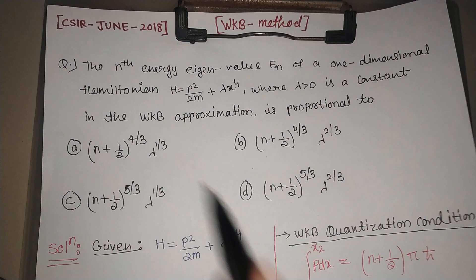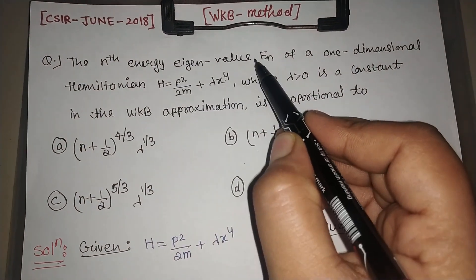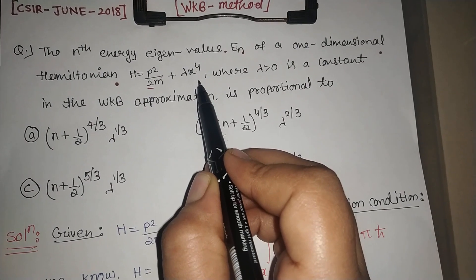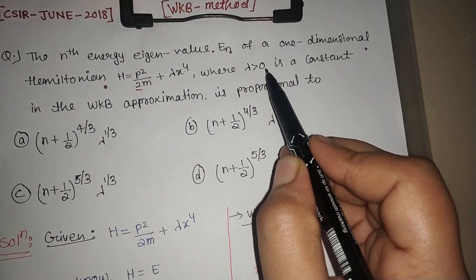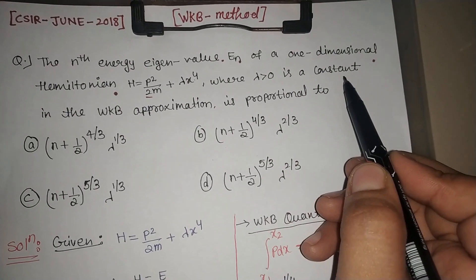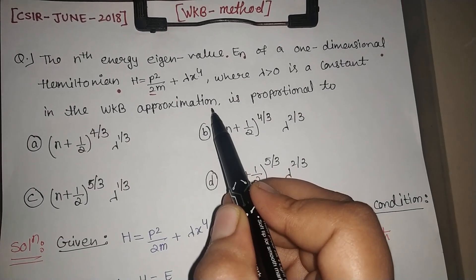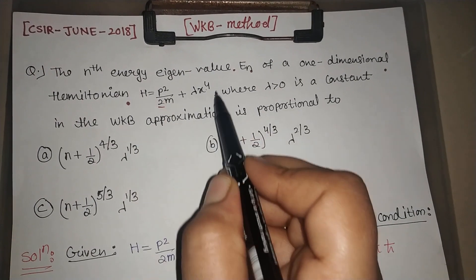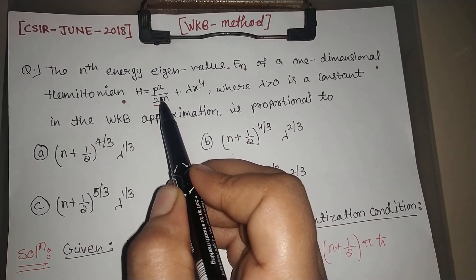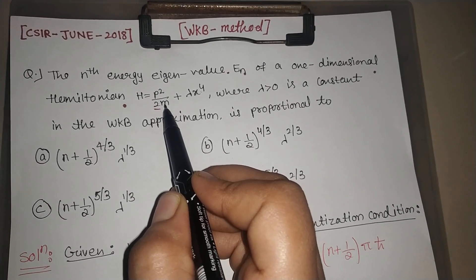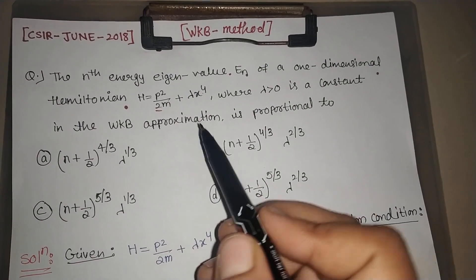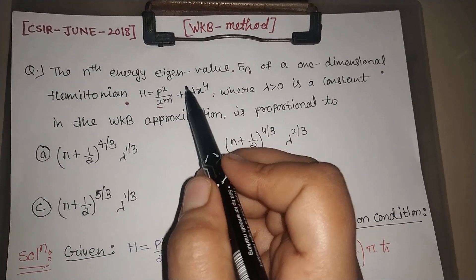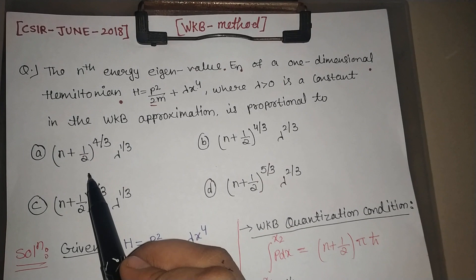The question is: the nth energy eigenvalue En of a one-dimensional Hamiltonian, which is given as H = p²/2m + λx⁴ where λ > 0 is a constant, in the WKB approximation is proportional to which power of n? That means we have to find how the energy eigenvalue varies with which power of n.